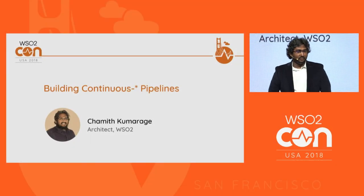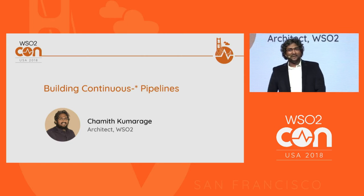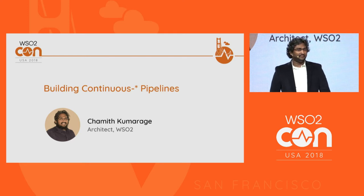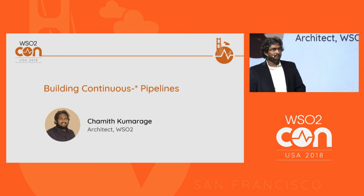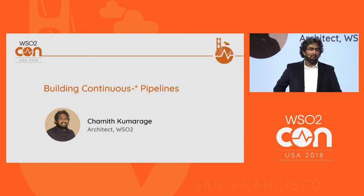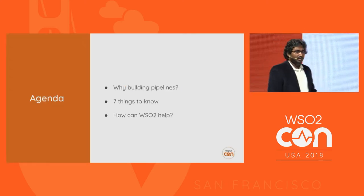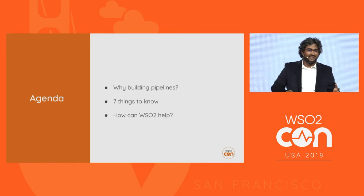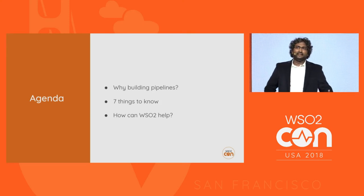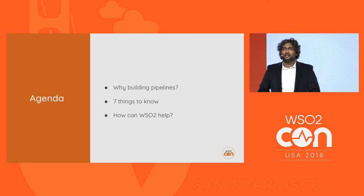I'm Chamit, and I'm sure you won't be able to pronounce my last name correctly — I can bet on that. So let's stick to Chamit. I will be talking about building various sorts of pipelines and the list of things that I have compiled for you to consider when building pipelines. We'll try to understand the different types of pipelines and why we need to build pipelines, and then the list of things, and then how WSO2 as a vendor can help you become successful in your agile development processes.